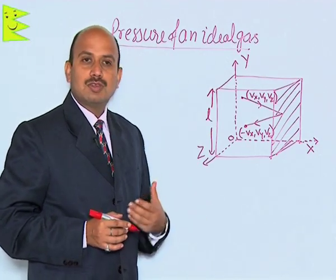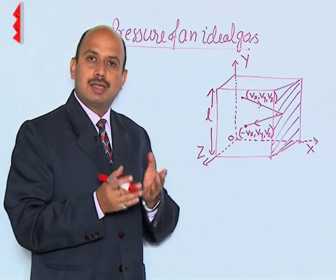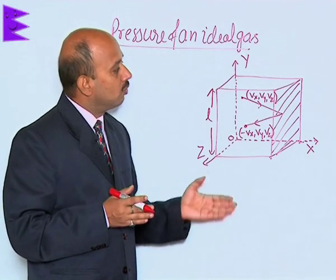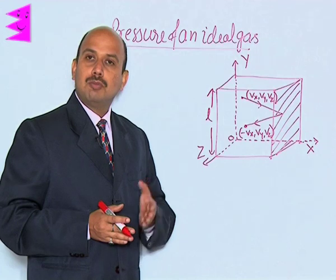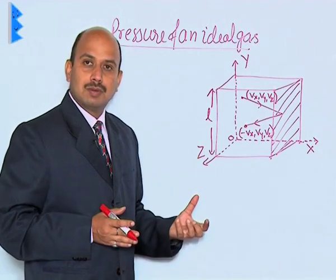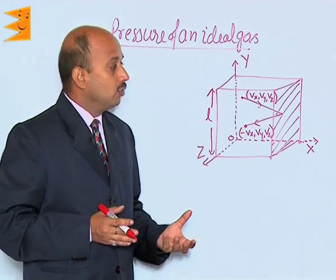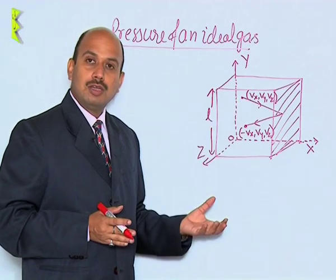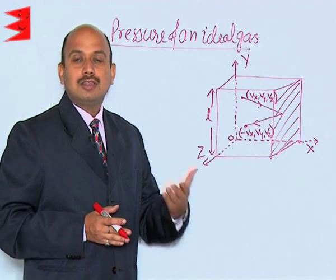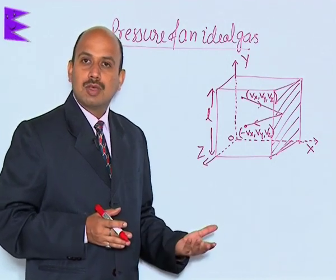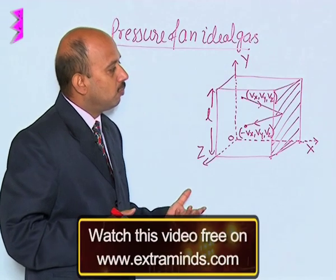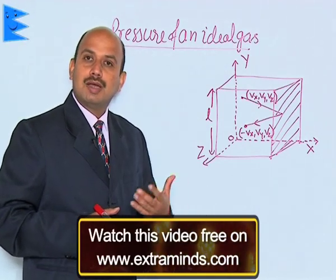When these gaseous molecules strike with the walls of the container, their collision is elastic. It means when these molecules collide with the walls, there is a change in momentum, and as we know, according to Newton's second law of motion, the rate of change of momentum is equal to force exerted. So when a molecule collides on the wall, its momentum changes — some momentum is imparted to the wall, and this momentum per unit time is known as force. Then we can calculate force per unit area, that is called pressure. It means the gaseous molecules exert pressure on the walls of the container.